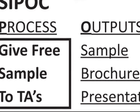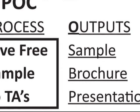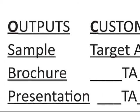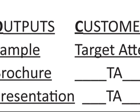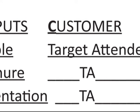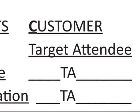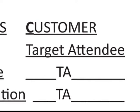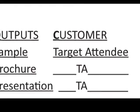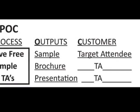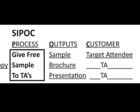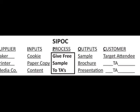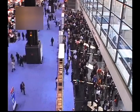The next column lists the outputs from this activity. In this case it's a sample brochure delivered with a cookie and a presentation. Finally, the last column lists the customer, which in this case is the target attendee. The SIPOC elements can now be used to define the process steps further. It's a standing record of what inputs, processes, outputs, etc. are relevant to specific customers and target attendees.